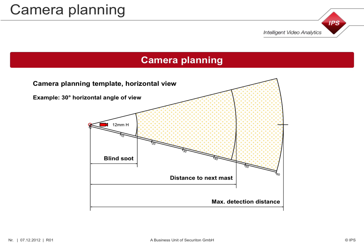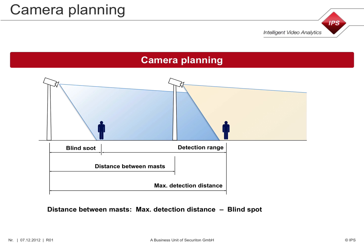Camera planning templates should contain segments displaying the blind spot, the distance to the next mast, and the maximum detection distance. You should have a template for each field of view you want to use. This figure illustrates the link between the maximum detection distance and the maximum detection range.